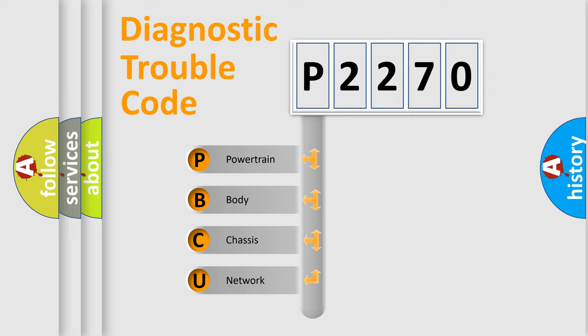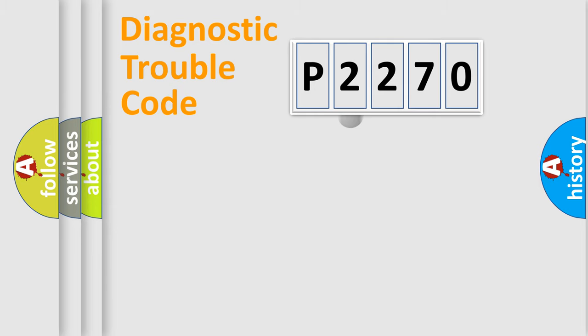We divide the electric system of automobile into four basic units: Powertrain, Body, Chassis, and Network. This distribution is defined in the first character code.